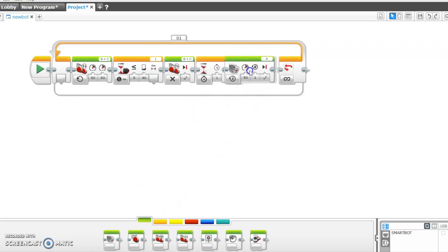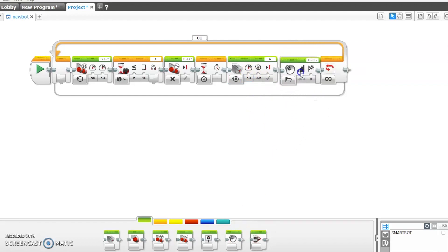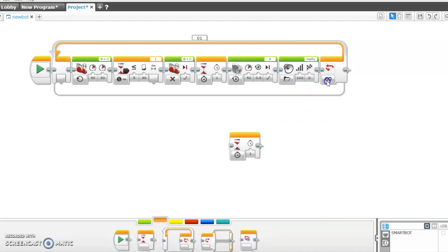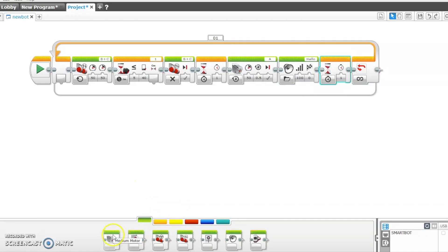Now we will put the medium motor that helps the robot to raise its hand. Now we will put the wait block for the robot to wait for another one second. Then we will put a medium motor block that helps the robot to put its hand down.